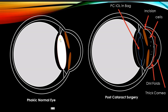This is a normal eye with the lens in place, and this becomes cataractous. This is the vitreous behind, and what we do is we go through a small incision, take out the cataract, and put a posterior chamber IOL in the bag after phacoemulsification.